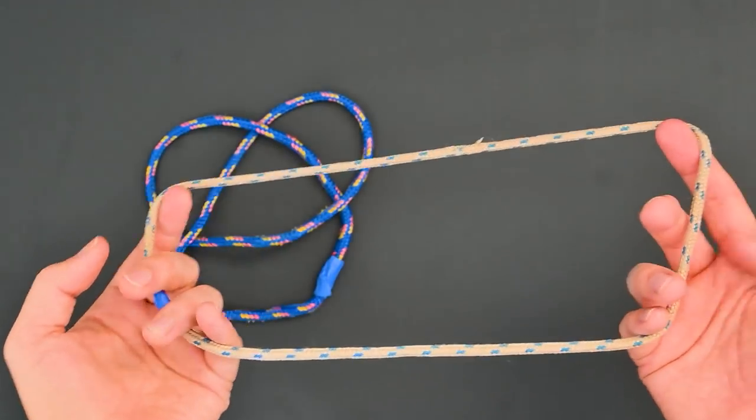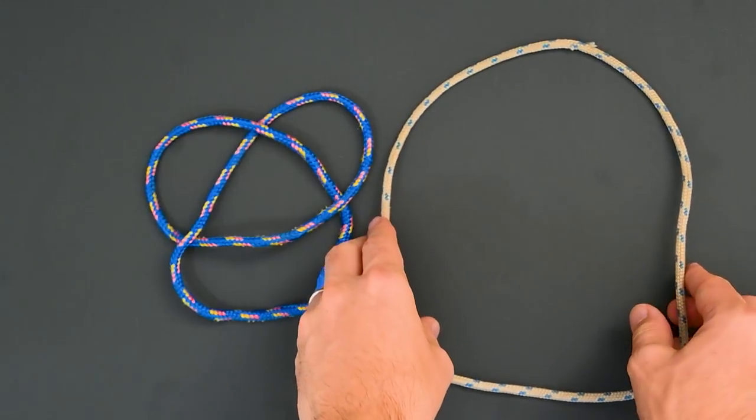If I try and untangle the first, I end up with just a circle, what we sometimes call the unknot.